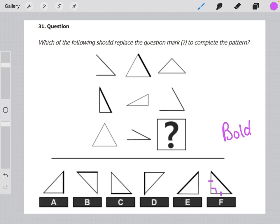So if we take a look at all of our bold outline triangles that we have in the matrix, we can see that the bold line is always on the right-hand side. So that would lead me to eliminate answer choices B through E.